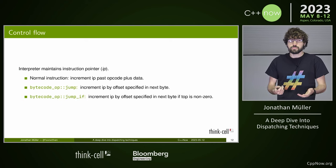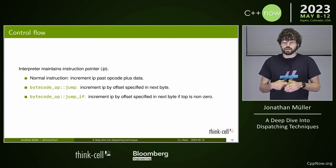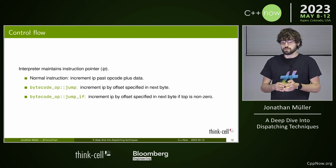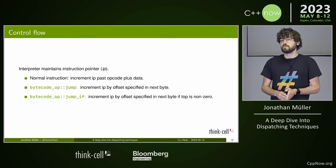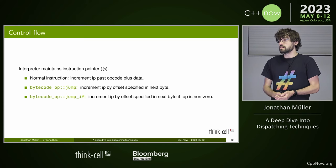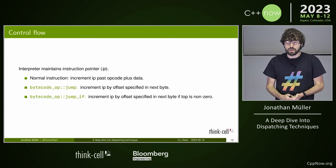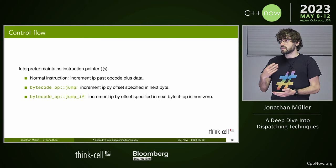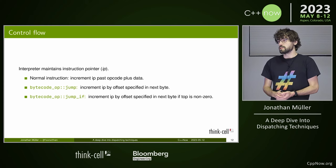For control flow, our interpreter maintains an instruction pointer (IP). A normal instruction simply increments the instruction pointer past the opcode and any data. After a push, we increment by two because we have one byte of data; after an add, we increment by one since there's no data. A jump instruction increments the instruction pointer by the offset specified as payload, allowing us to implement a loop.